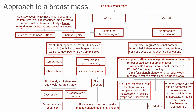Even for the benign fibroadenoma, you do want to reevaluate the patient in six weeks. This gives them one or two menstrual periods to see if the suspected benign fibroadenoma decreases in size and tenderness. If it does, then you're done with that patient. Remember, this is only for adolescent patients and only for masses that are not concerning. If the suspected fibroadenoma increases in size, you're going to move on to imaging.